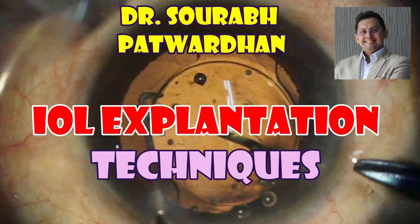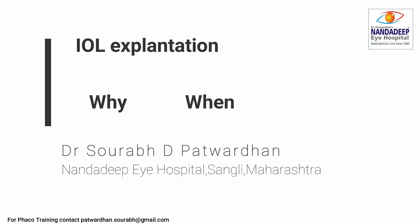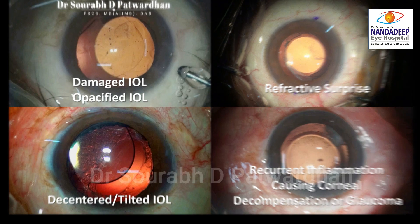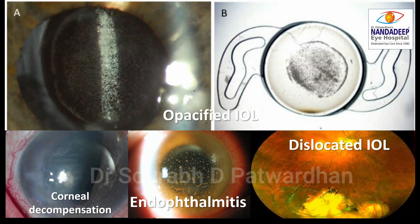I'll be speaking about different IOL explantation techniques — when and how we have to explant the IOL. Common indications for IOL explantation include a damaged IOL, refractive surprise, a decentered or tilted IOL giving dysphotopsia or refractive errors, and IOL causing recurrent inflammation including corneal decompensation.